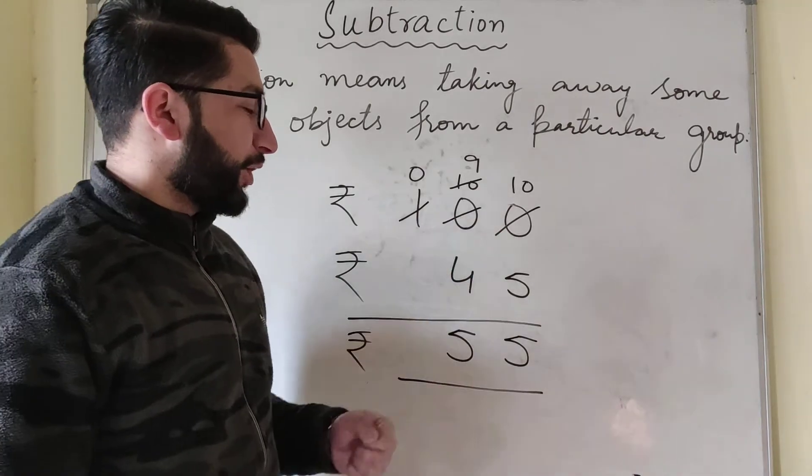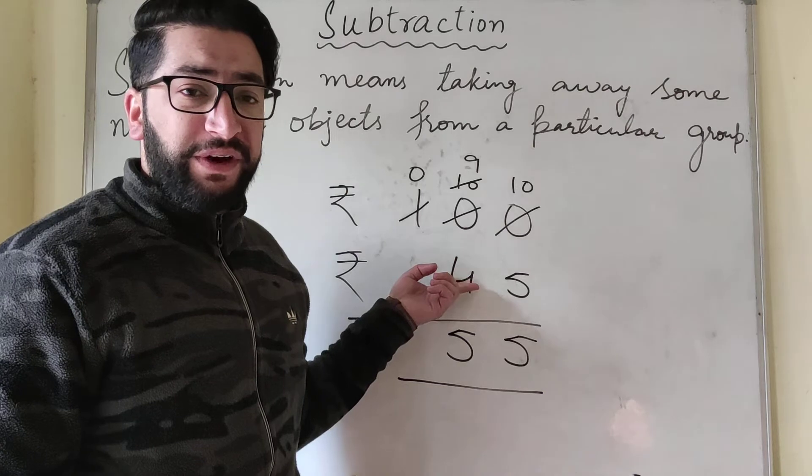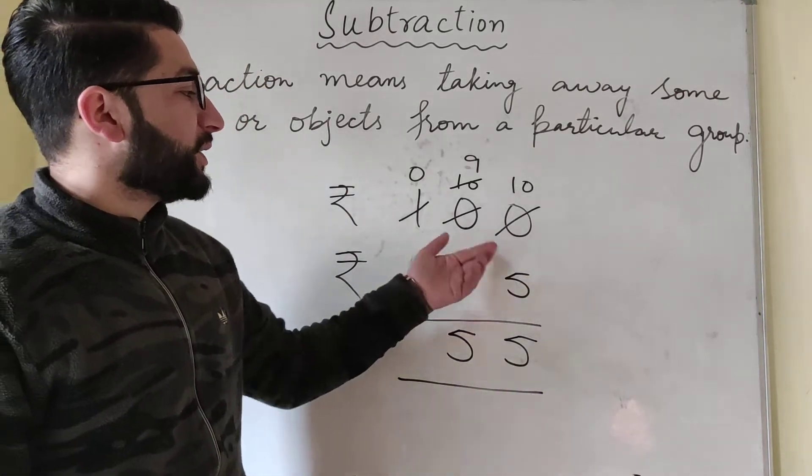So how much money will Aakib receive back is rupees 55. At the beginning he had 100 rupees note. He purchased bread for rupees 45. How much money will he receive back? That is 55.